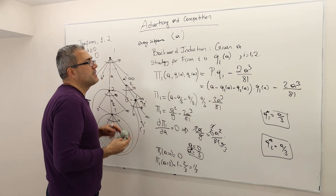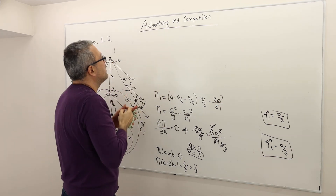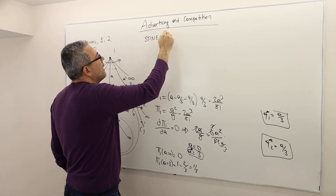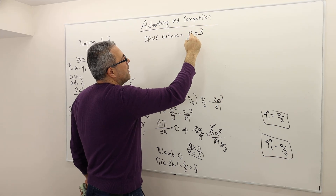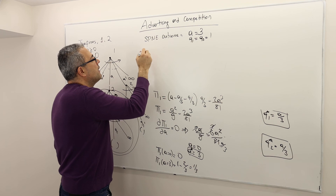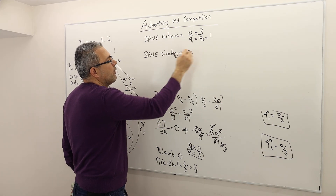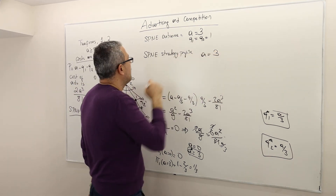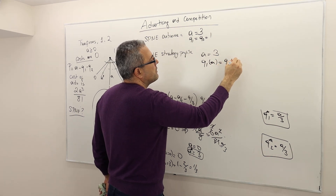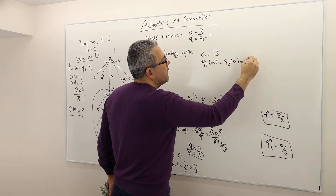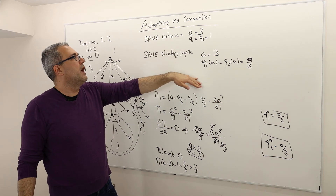So to sum up: the subgame perfect Nash equilibrium outcome is A = 3, Q1 = Q2 = 1. The subgame perfect Nash equilibrium strategy profile specifies that firm 1 chooses advertisement level 3, and the quantity strategy for both firms is Q_i(A) = A/3 for all values of A.